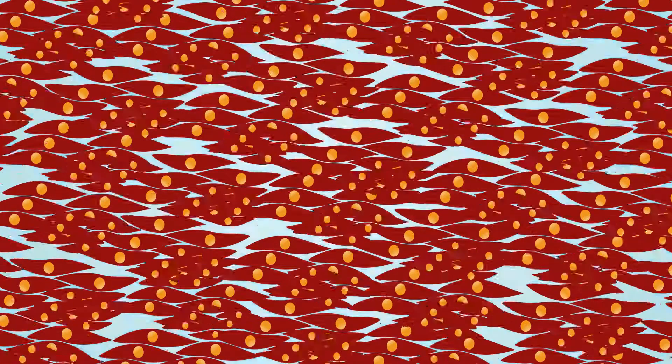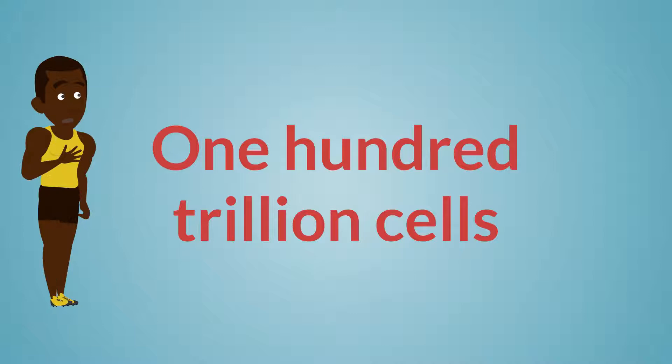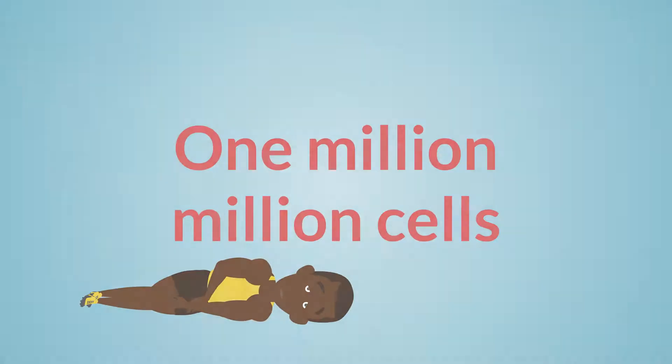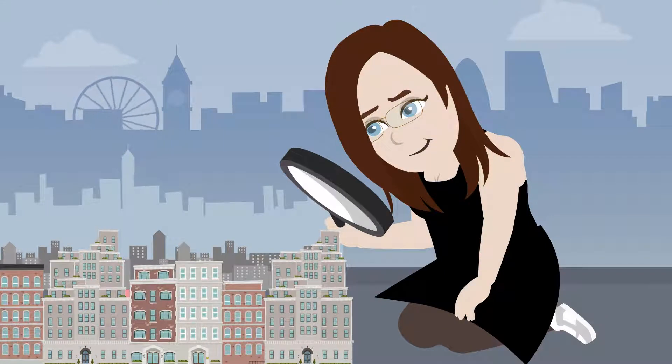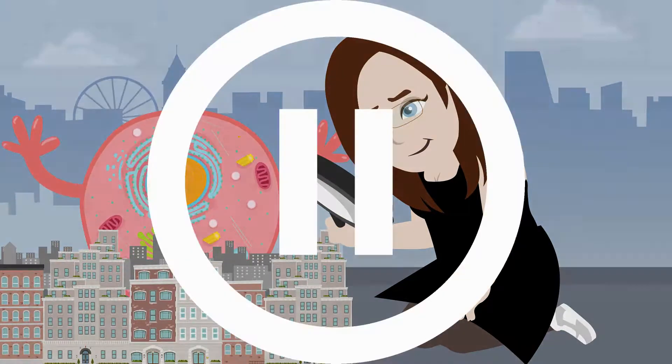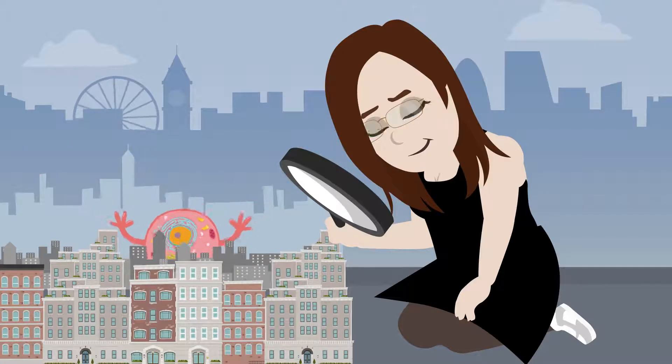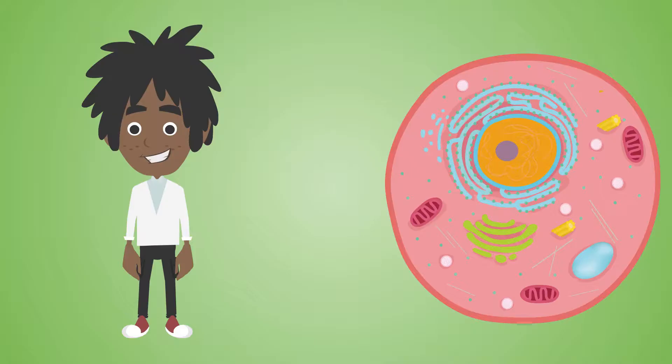Our body is actually made up of 100 trillion cells - this is 1 million million cells. So do you think cells are very small or very big? Yes, that's right, cells are very small.